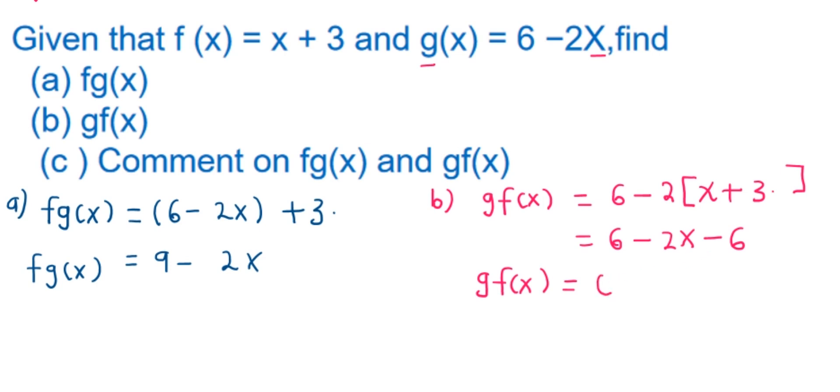So g of f of x is equal to, now what is 6 minus 6? 6 minus 6, it is 0. So we have 0 minus 2x. Therefore, g of f of x is equal to negative 2x.